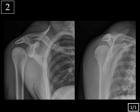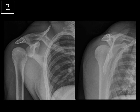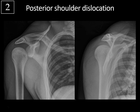Case 2, another shoulder. This time we're looking at the right shoulder. On the frontal view the humeral head has a lightbulb appearance — it's fixed in internal rotation. We also don't have the normal overlap with the glenoid that we would expect. On the scapular Y view, the humeral head is dislocated posteriorly to the glenoid. Compared to the last case where the humeral head was anterior, this is typical for a posterior shoulder dislocation.